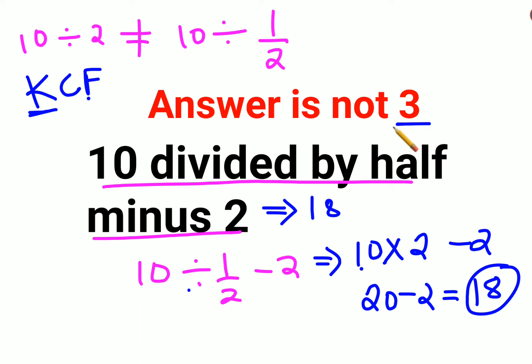A lot of people got the answer as 3 because they divided it by 2. So 10 divided by 2 is 5, minus 2, they got the answer as 3. But I hope this is very clear—there is a very silly error which a lot of people ended up making.